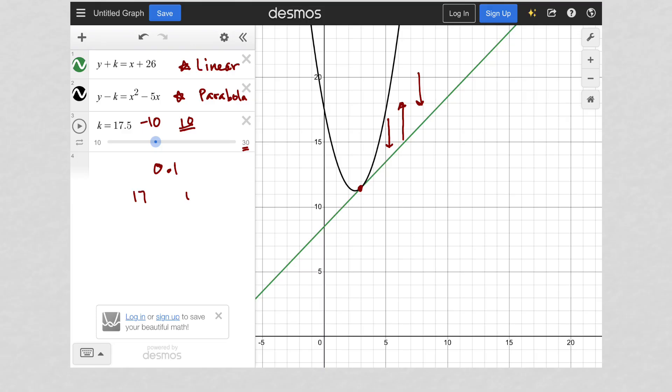So instead of seeing like a 17, then an 18, I was able to check 17.1, 17.2, so on and so forth, until I found exactly where the lines intersected at 17.5.